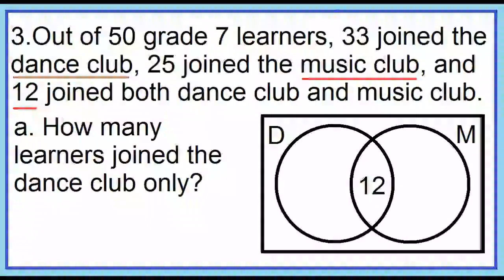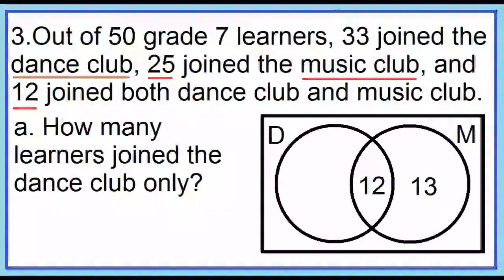Next, 25 joined the music club. Since we already have 12, 25 minus 12 is 13. Place 13 in circle M. Next, 33 joined the dance club. Since we already have 12 in circle D, 33 minus 12 equals 21. Place 21 in circle D.